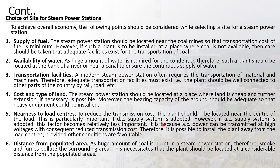If a DC supply system is adopted, the plant must be near the load center. However, if an AC supply system is adopted, this factor becomes relatively less important. It is because AC power can be transmitted at high voltages with consequent reduced transmission cost. Therefore, it is possible to install the plant away from load centers, provided other conditions are favourable.